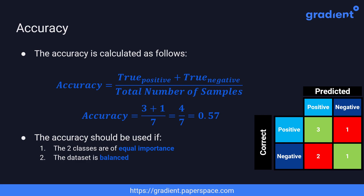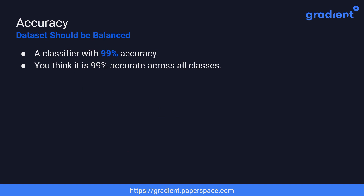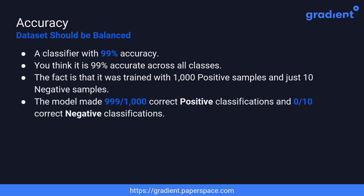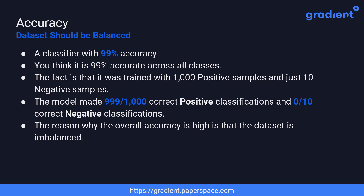To see how data imbalance affects accuracy, consider a classifier that is 99% accurate. You might think it performs well across all classes, but in fact it was trained with 1,000 positive samples and just 10 negative samples, making 999 correct predictions for the positive class and no correct predictions for the negative class. The high overall accuracy is simply because the dataset is imbalanced.